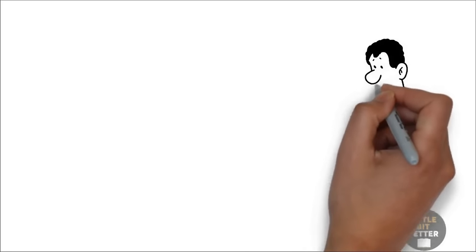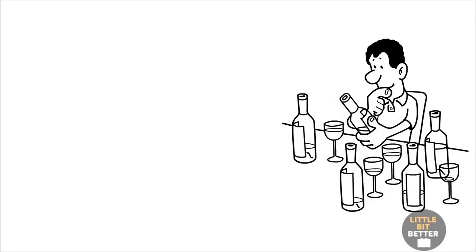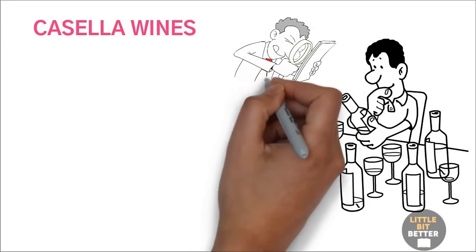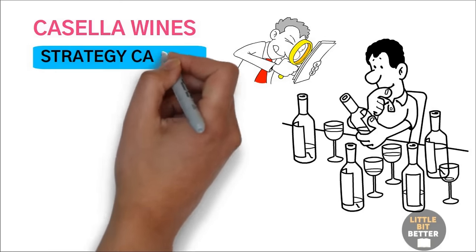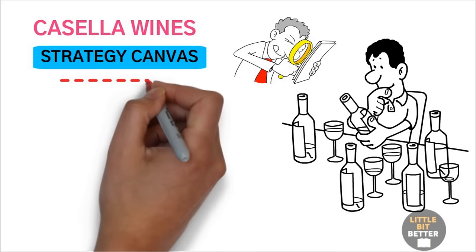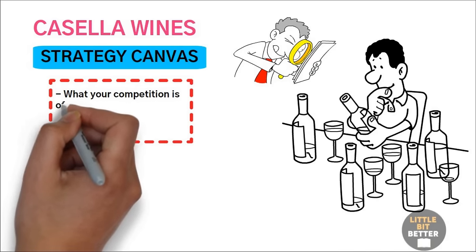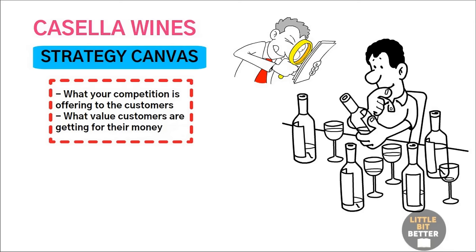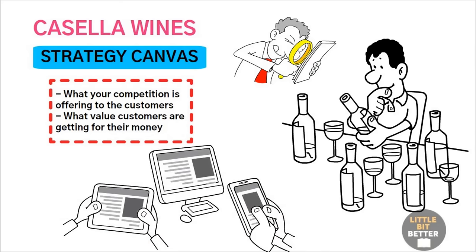Let me explain it with an example. The wine market is one of the most competitive markets in the USA. But despite that, the Australian wine company called Casella Wines became the number one wine thanks to value innovation. Casella Wines first analyzed the market by using a blue ocean tool called Strategy Canvas. The Strategy Canvas is a simple framework that helps you to understand two important things about the market. What your competition is offering to the customers and what value customers are getting for their money.